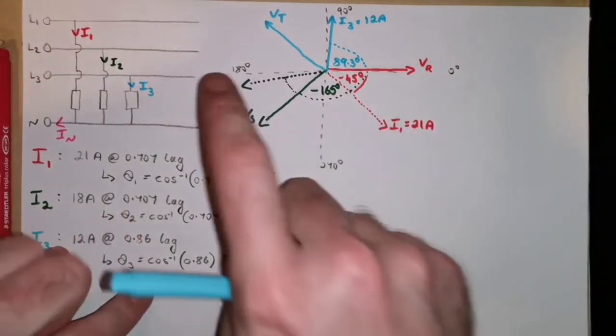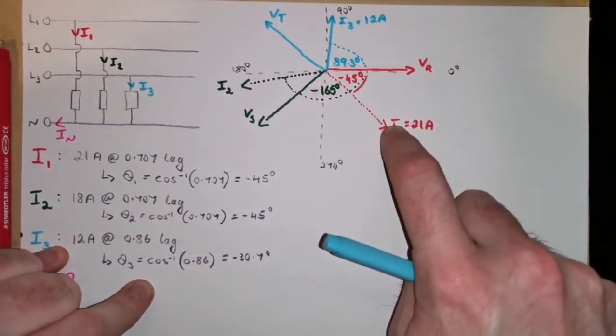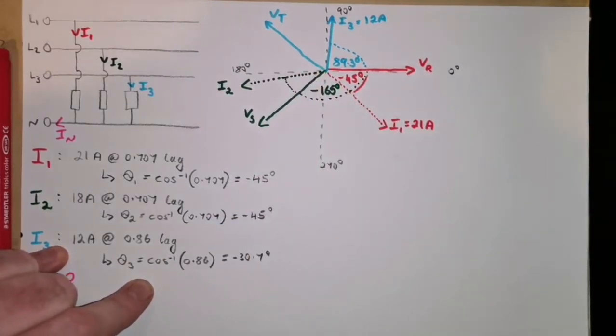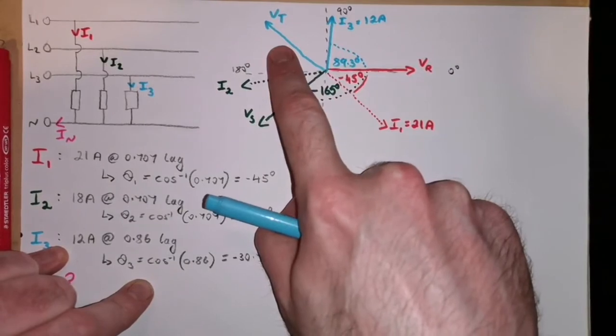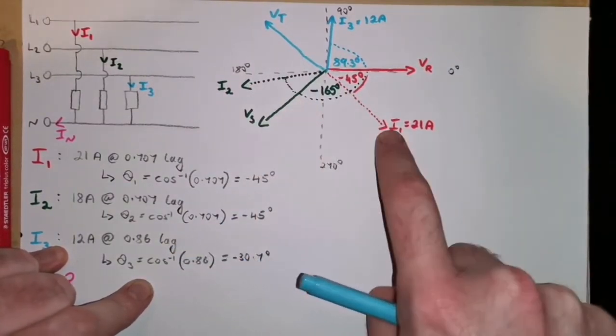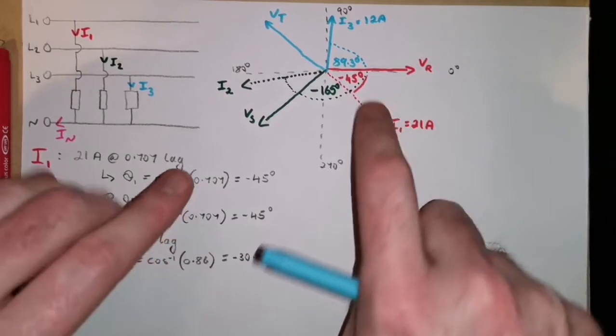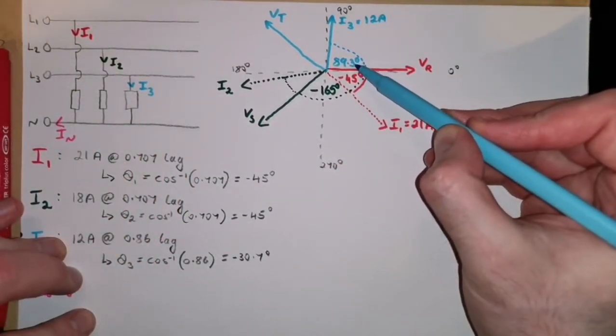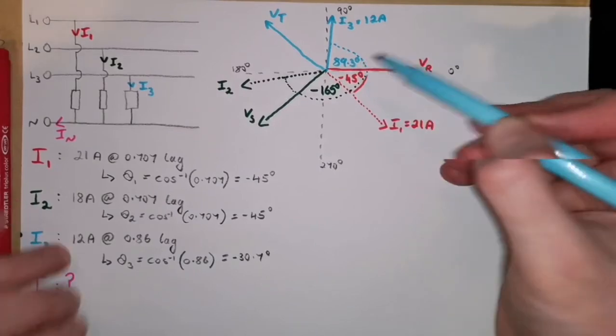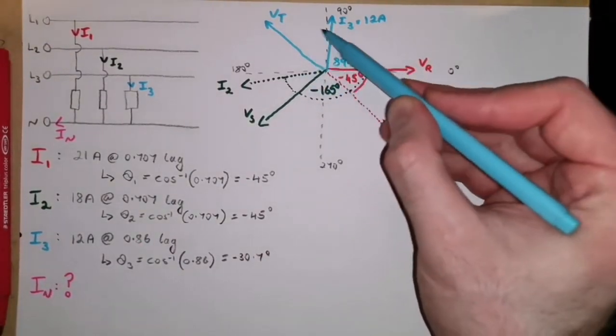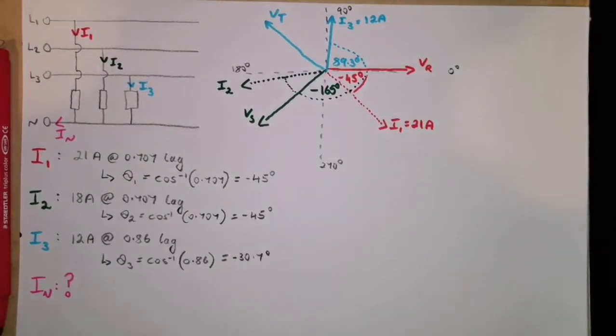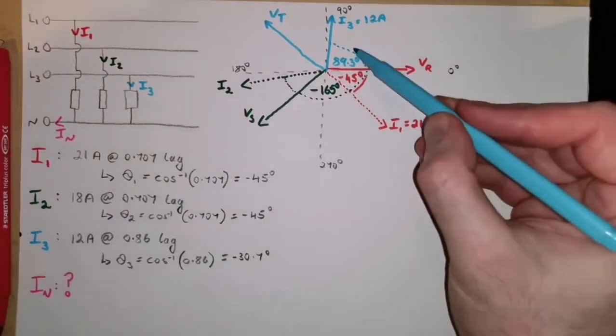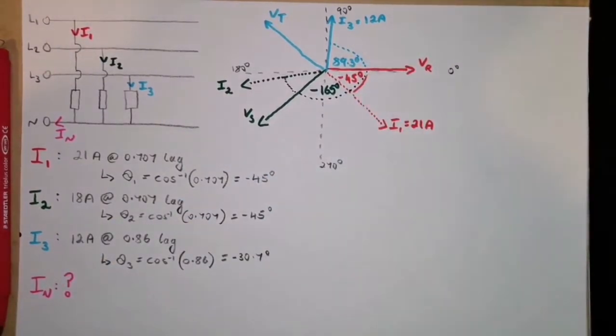In our first question, all of the currents were in phase with the voltages. They're all at a unity power factor. So, I3 was in phase with Vt, I2 was in phase with Vs, and I1 was in phase with Vr. So, we just used the actual angles of those voltages. Because now, we're taking into account the fact that each of these currents is lagging behind the voltage that's driving it, we have to calculate the currents using the phases. So, I calculate the overall angles of the currents using each of their phases.